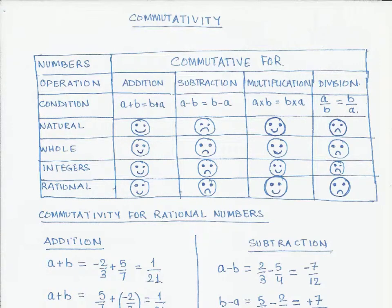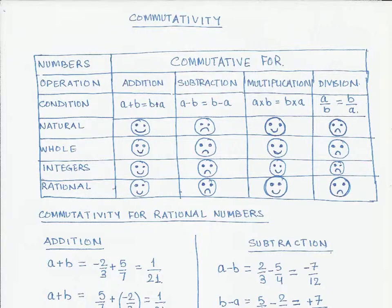In this video, let us look at the commutative property for different numbers. We have already learned about the commutative property for natural numbers, whole numbers, and integers. Here we are going to add to our knowledge of commutativity for rational numbers. Commutativity simply means: what happens if we change the order of the numbers in the operation?